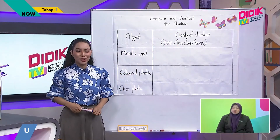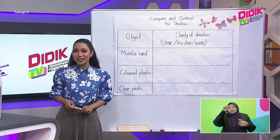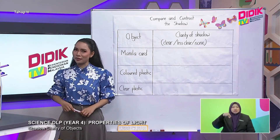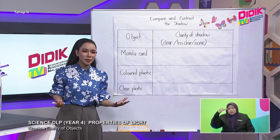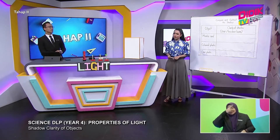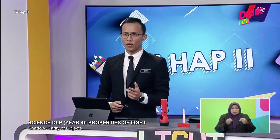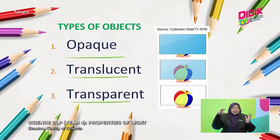Hi pupils, welcome back to Slot Tahap 2 for DDTV KPM. For this segment, I have a question to ask Mr. Quack, our science DLP teacher for today. Mr. Quack, there are some cases where I see objects — they have shadows, but some shadows are not clear, some are less clear. What is it about that? Yes, because this has got to do with the type of object. There are three characteristics. First of all, you need to know that a shadow is formed when light is obstructed — blocked by an object. And these objects have three types.